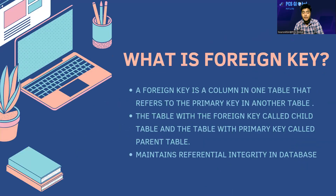What is a foreign key? A foreign key is a column in one table that refers to the primary key in another table. The table with the foreign key is called the child table and the table with the primary key is called the parent table. A foreign key maintains referential integrity in the database, meaning when data related from the table containing the primary key is changed, it automatically affects the data in the table containing the foreign key.